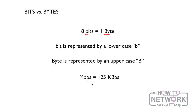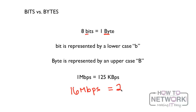So that's why when you get your cable modem installed and they say you're going to get 16 megabits per second transfer rate, you get home and you're really only going to get 2 megabytes per second in transfer.